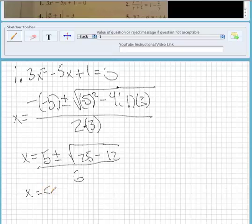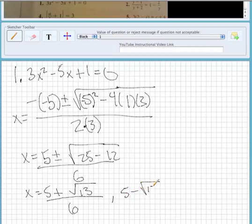And then x equals 5 plus the square root of 13 over 6, and it also equals 5 minus the square root of 13 over 6. Or you can say plus or minus; either way is correct.